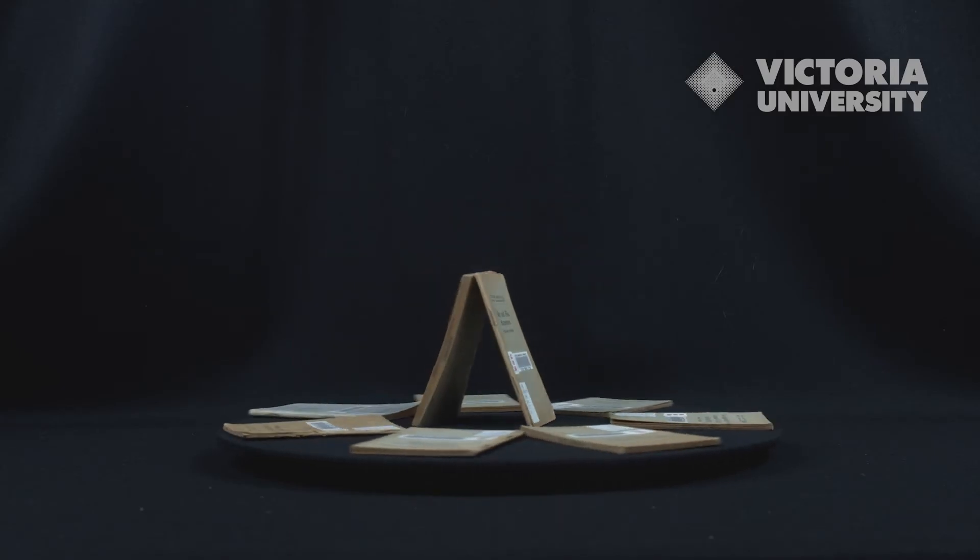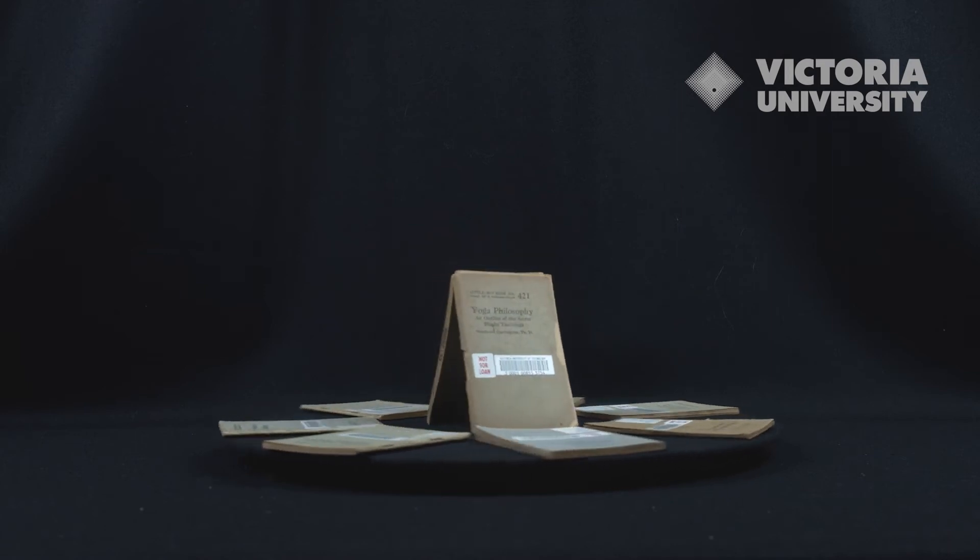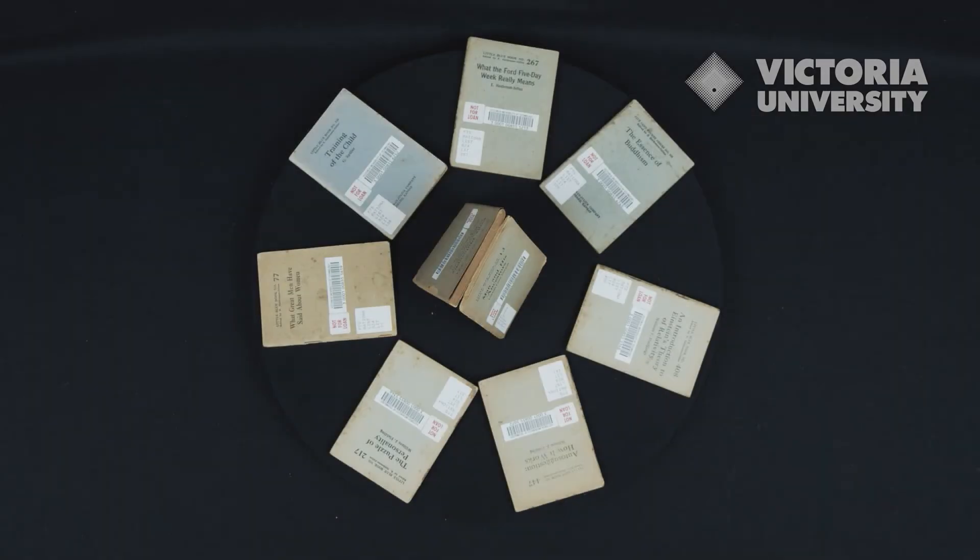Victoria University Library accepted the Rationalist Library from the RSA as one of its research collections and housed it at the Footscray Park campus.